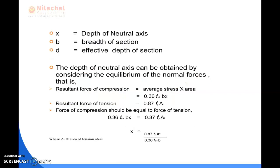The symbols used in the section are: x is the depth of the neutral axis, b is the breadth of the section, and d is the effective depth of the section. The depth of the neutral axis can be obtained by considering the equilibrium of normal forces, where the resultant force of compression equals average stress into area. The average stress is 0.36FCK, where FCK is the characteristic strength of concrete and Fy is the characteristic strength of steel.